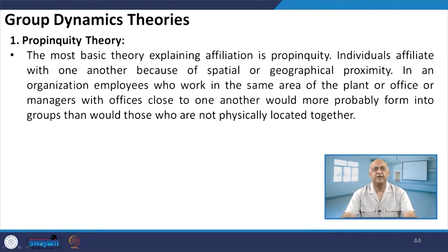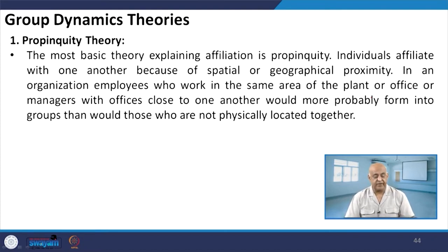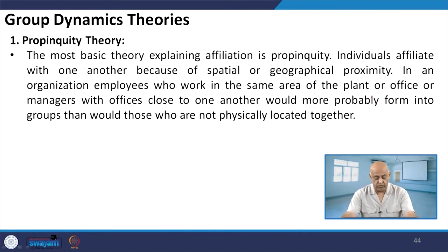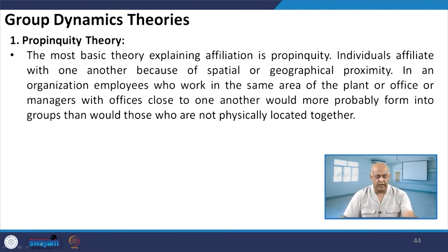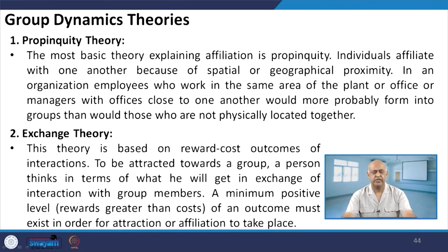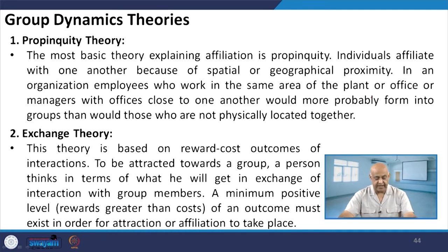Now we will discuss group dynamics theories. The propinquity theory is the most basic theory explaining affiliation — individuals affiliate with one another because of spatial or geographical proximity. In an organization, employees who work in the same area or managers with offices close to one another would more probably form groups than those who are not physically located together. The exchange theory is based on reward-cost outcomes of interactions. To be attracted to a group, a person thinks in terms of what he will get in exchange for interacting with group members.